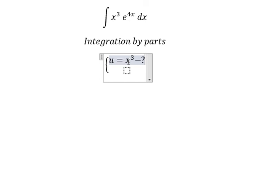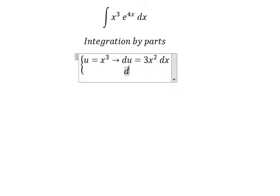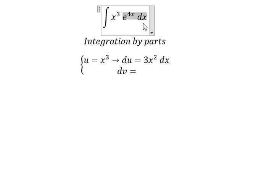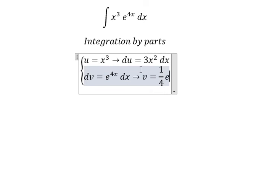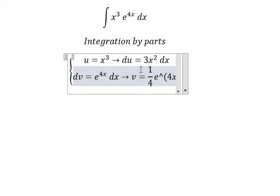So for this one, if we differentiate, we have du equals 3x² dx. For dv, that is e^(4x) dx. So the integration of this one, we have v equals 1 over 4 times e to the power of 4x.